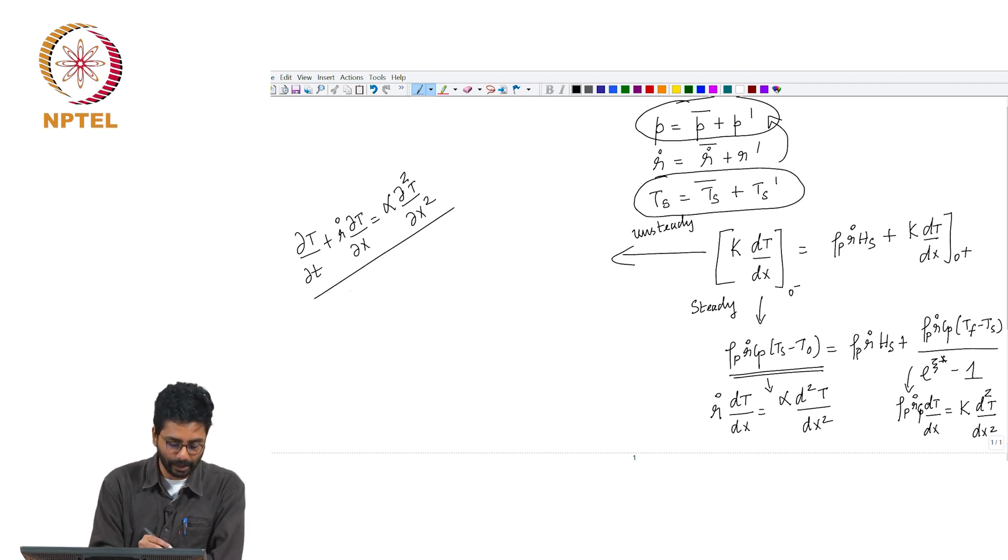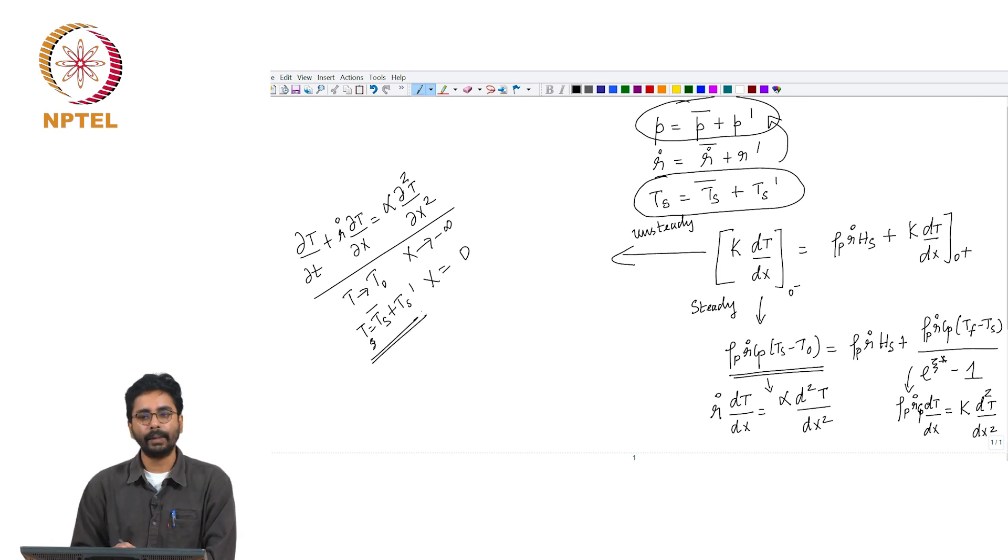This equation must be solved with the following boundary conditions: T goes to T_0 as x goes to minus infinity, but T equals T_s plus T_s' at x equals 0. Therefore, this term will fluctuate with time. This term will have a value that is fixed by the flux balance. What about the gas phase? It is fixed by the flux balance.